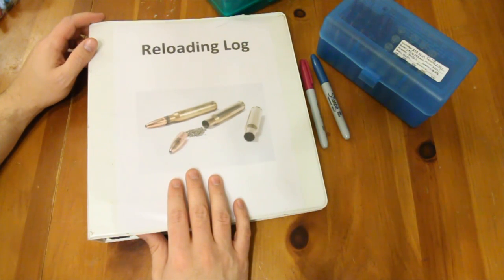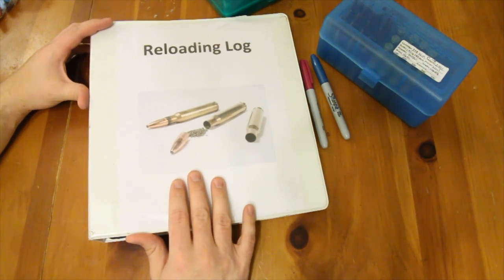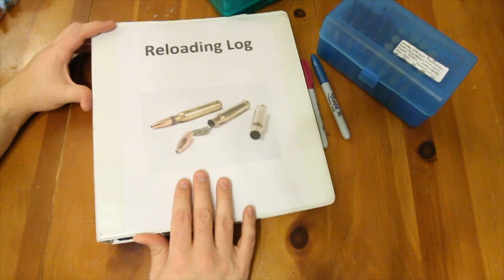Now the changing components in your reloads can have a small effect or it can have a large effect, and it can have a different effect depending on the rifle. So you want to make sure that if you lose a little bit of accuracy when you change bullets, you know why.